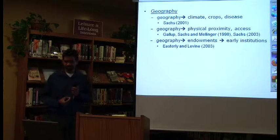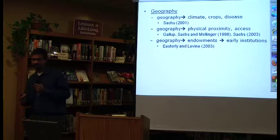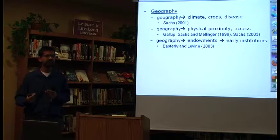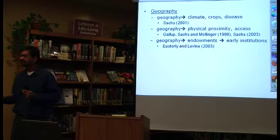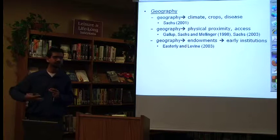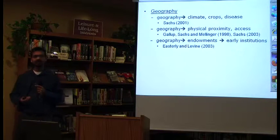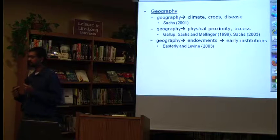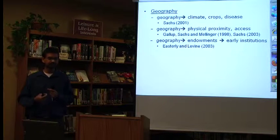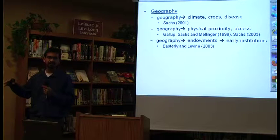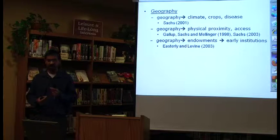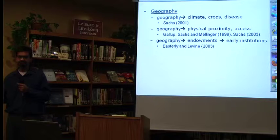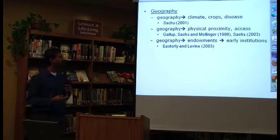Geography also determines whether you are landlocked or a coastal country, and whether you are close to other trading partners. If you are a coastal nation close to other countries, you will trade more, and have access to world markets and new ideas, which spurs growth. A third approach looks at the endowments a country is bestowed with and the kind of crops cultivated. If a country is predominantly a cash crop-oriented economy, exploitative structures emerge. If a country has food crops, more equitable structures evolve, and these structured institutions impact development. All these hypotheses have found support in empirical testing.